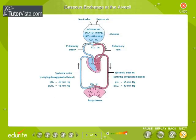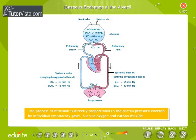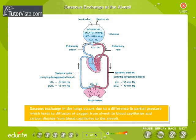Gaseous exchange initially takes place between the alveoli of the lungs and blood capillaries, and finally between blood capillaries and body tissues, by a process called diffusion. The process of diffusion is directly proportional to the partial pressure exerted by individual respiratory gases such as oxygen and carbon dioxide. Gaseous exchange in the lungs occurs due to a difference in partial pressure, leading to diffusion of oxygen from alveoli to blood capillaries and carbon dioxide from blood capillaries to the alveoli.